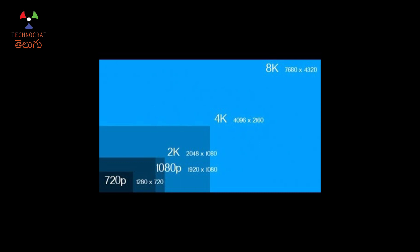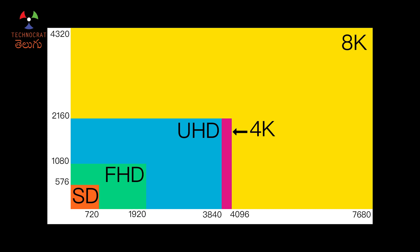If you use Full HD, the resolution is 1080 by 1920 pixels. In 2K video format, there are around 2048 horizontal pixels. Then for UHD, it is double 1080p — so 2160 vertical pixels — and the horizontal is 3,840 pixels.